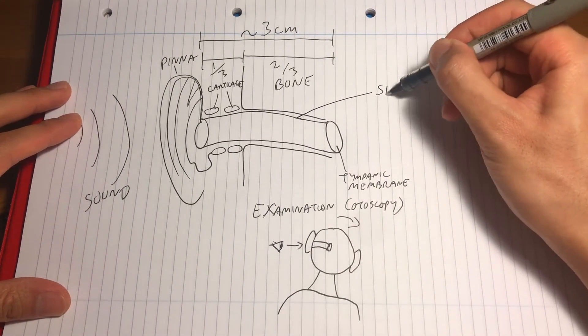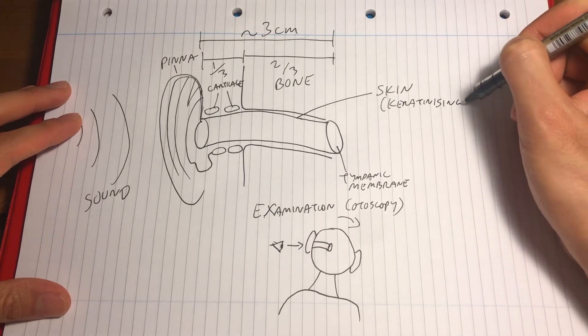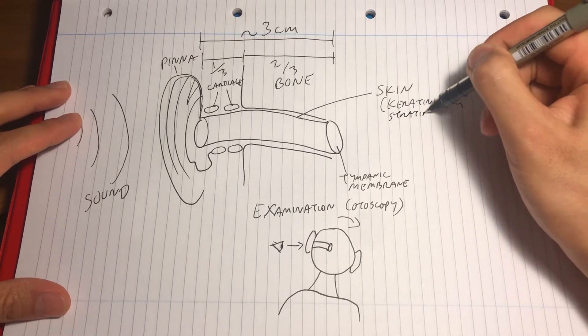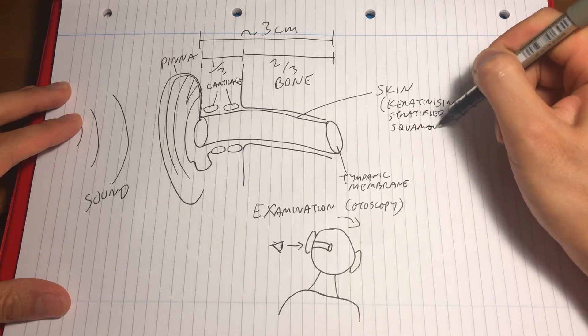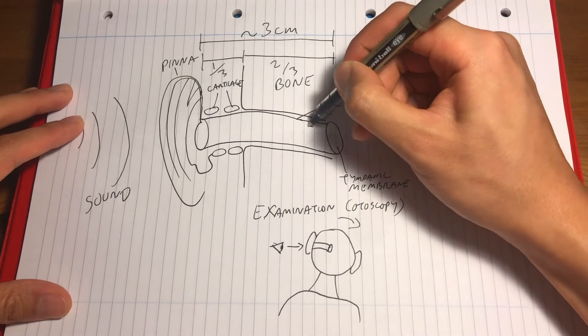The walls of the canal are lined with essentially skin, so keratinizing stratified squamous epithelium. And this migrates in a direction heading laterally or towards the outside of the ear.